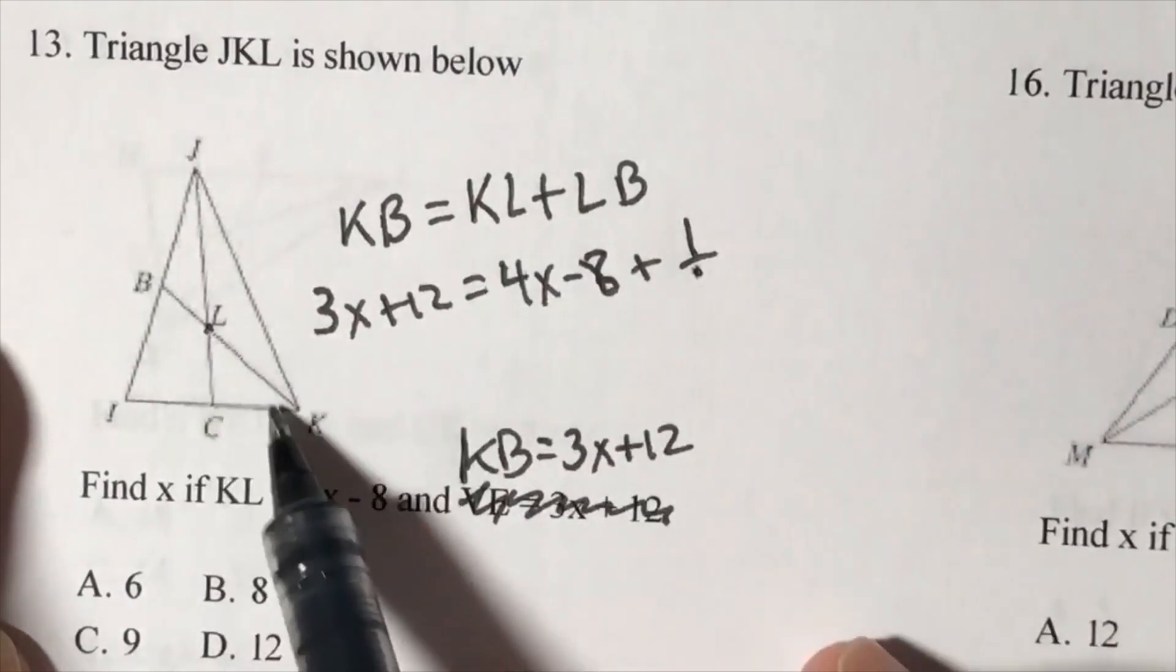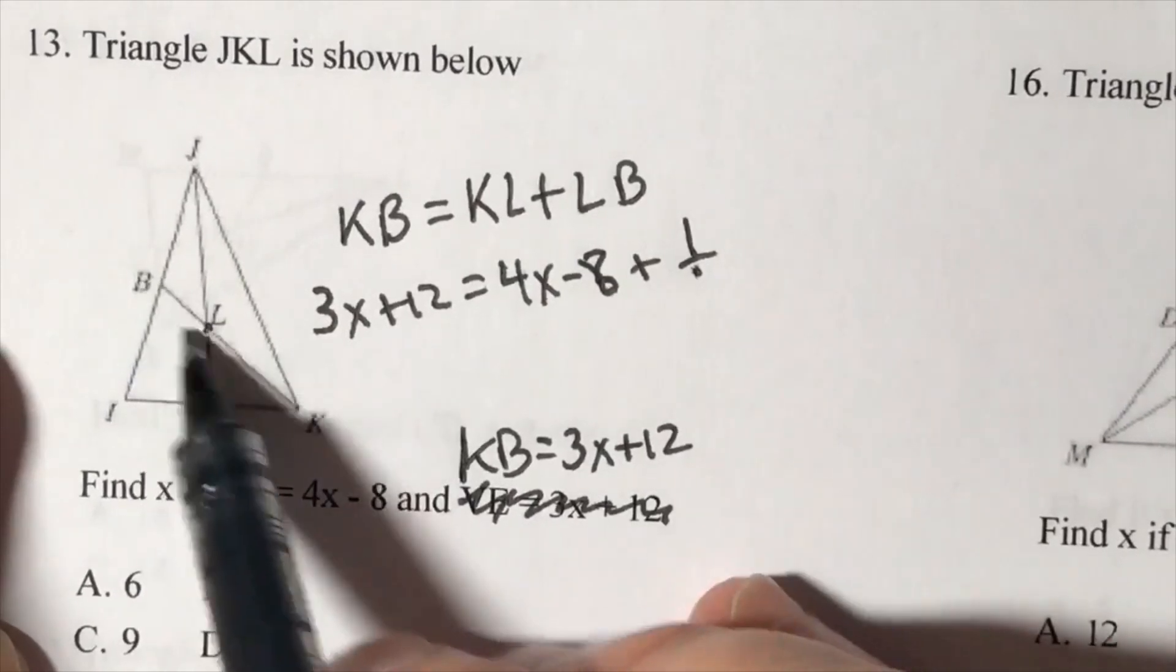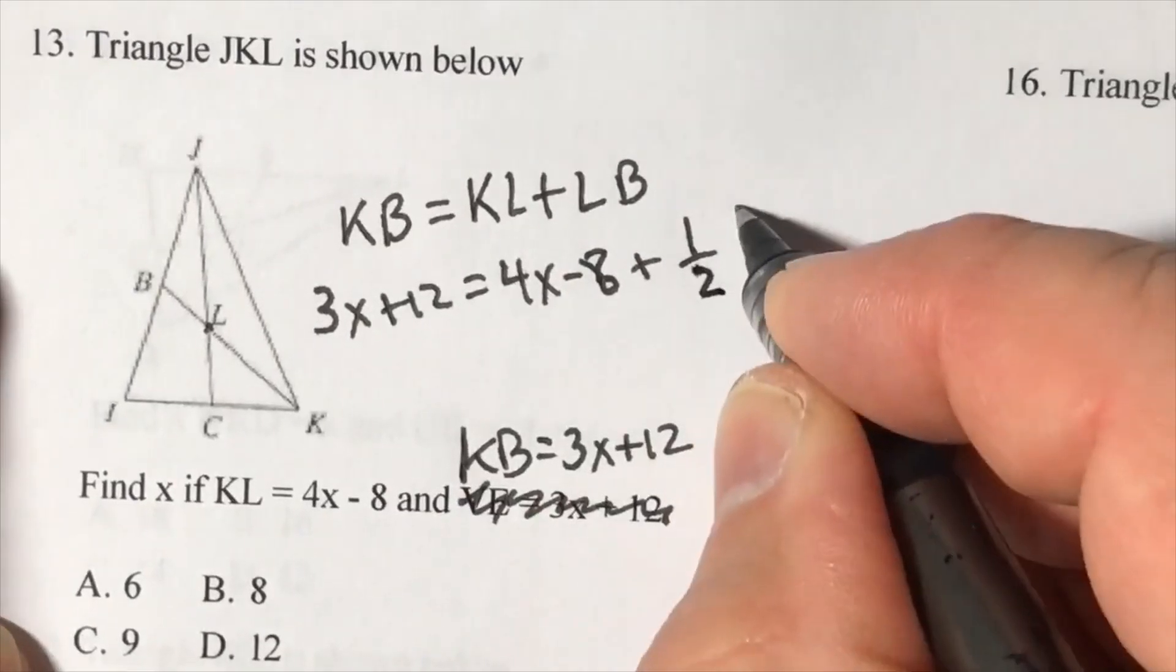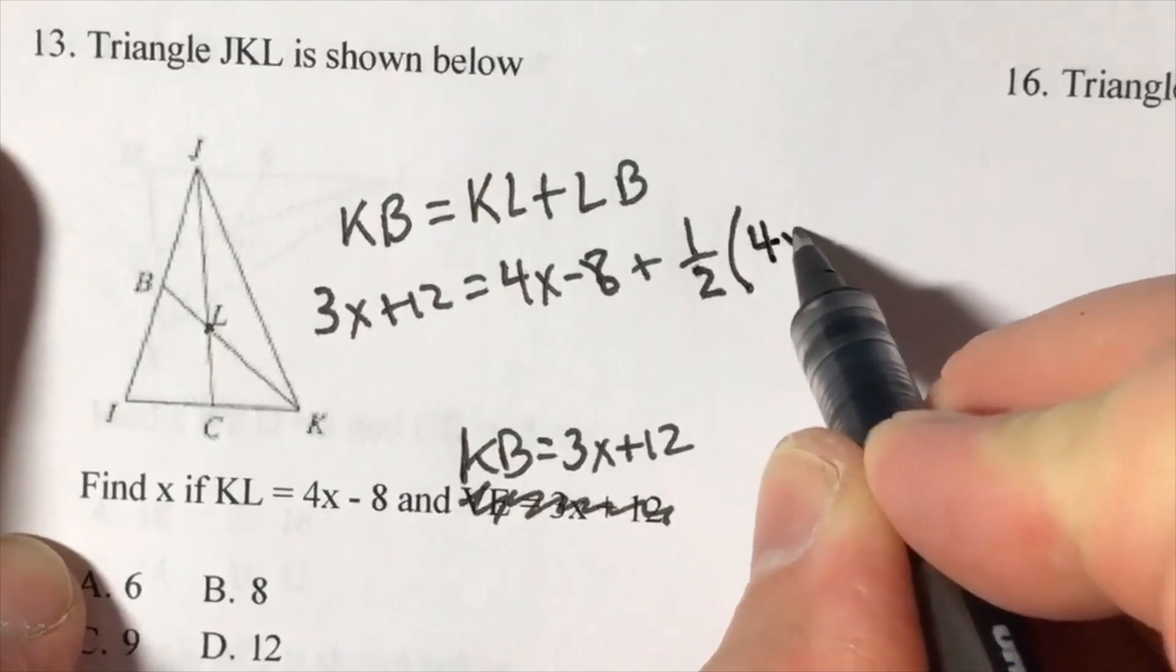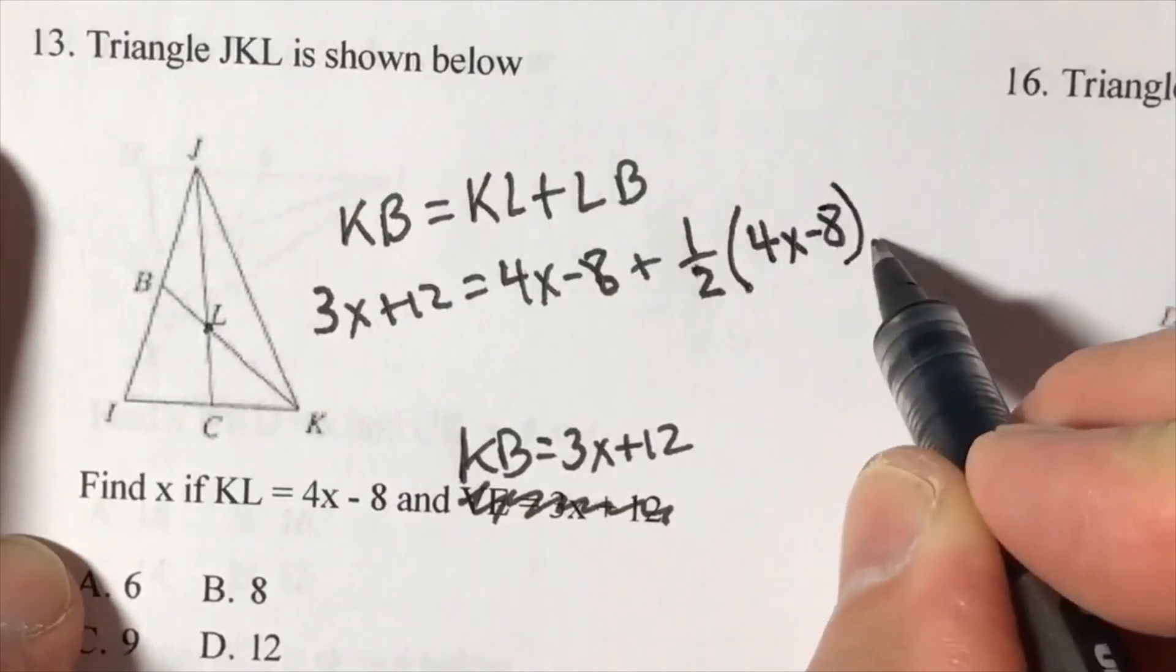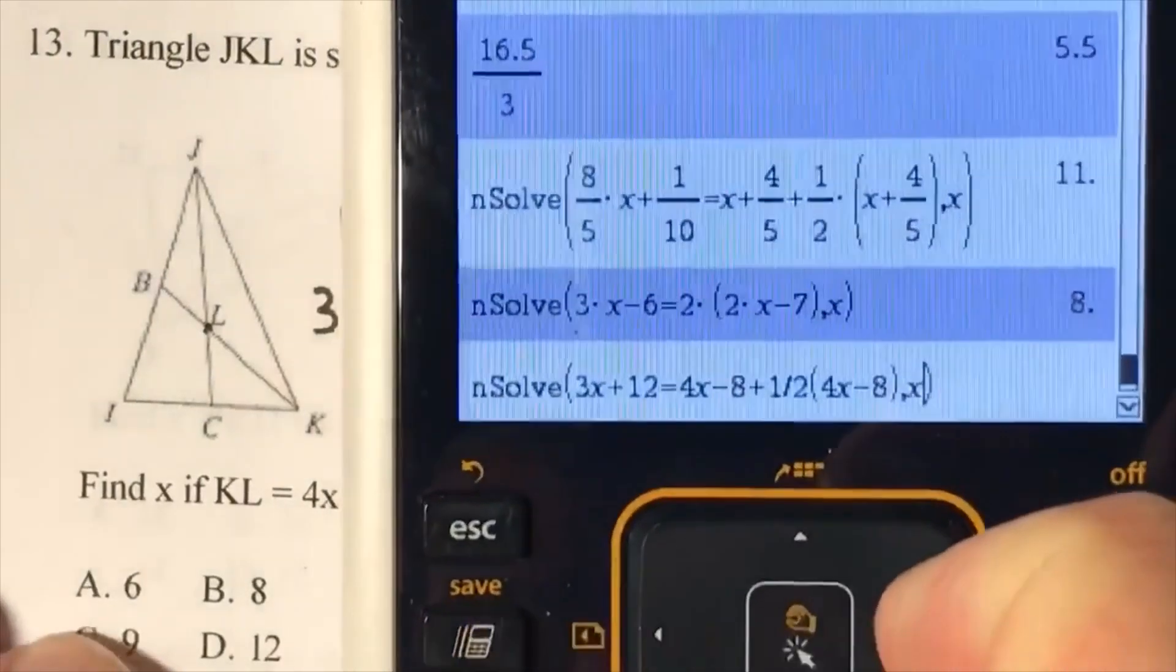If we take half of KL, we'll find the other part. So we have to take half of that and put it back in here.